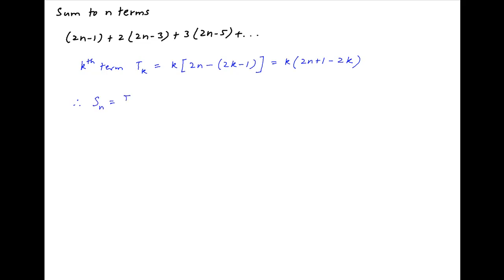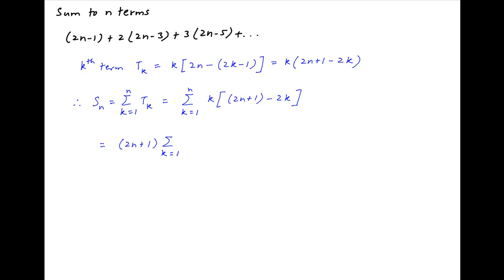Therefore the sum to n terms, let's denote it by Sn, is equal to the summation of tk where k goes from 1 to n, which equals the summation of k times (2n plus 1 minus 2k). This is equal to (2n plus 1) times summation k, minus 2 times summation k squared, where k goes from 1 to n.